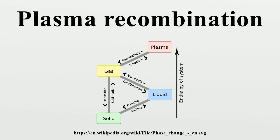An everyday example of rapid plasma recombination occurs when a fluorescent lamp is switched off. The low-density plasma in the lamp recombines in a fraction of a second after the plasma-generating electric field is removed by switching off the electric power source.